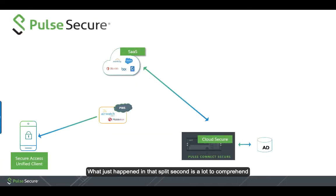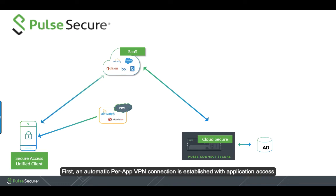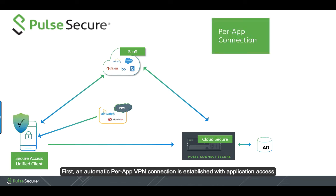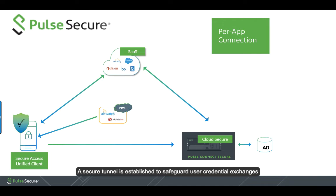What just happened in that split second is a lot to comprehend. First, an automatic per-app VPN connection is established with application access, so users need not manually launch the PULCH client to establish connections.